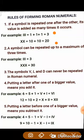The second rule says a symbol can be repeated up to a maximum of 3 times. For example, 3 is written as III and 30 is written as XXX. There are certain symbols that cannot be repeated in the Roman numeral system. These symbols are V, L, and D.